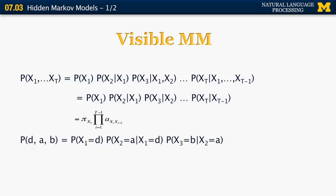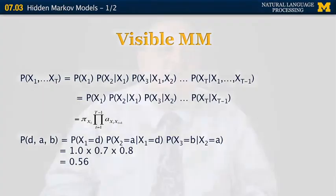What's the probability of observing the sequence D, A, B? That's P(first state = D) times P(second state = A | first state = D) times P(third state = B | previous = A). Substituting the numbers from the example, the first is 1, the second is 0.7, and the third is 0.8. Multiplying them together, the sequence D, A, B has a probability of 0.56. We can do the same for any other sequence.